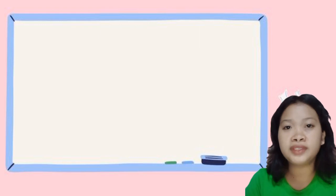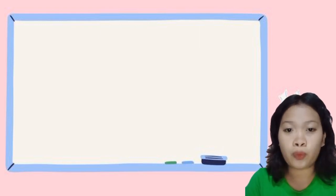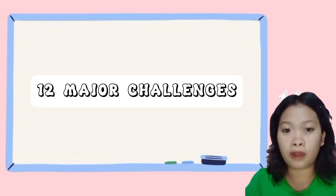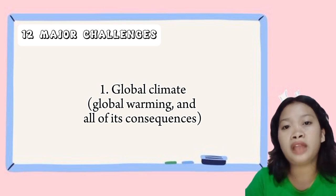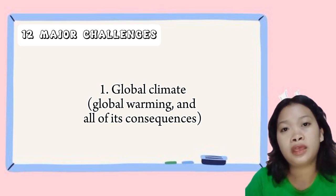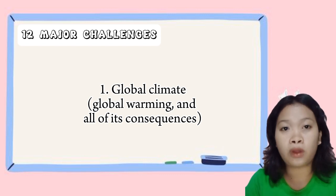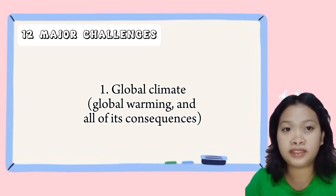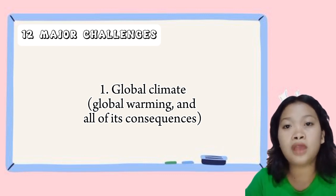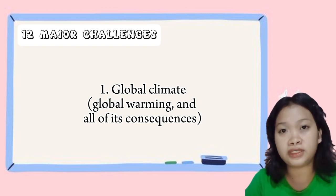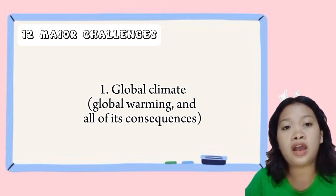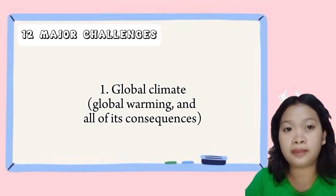When we say environmental science, there are also major challenges. We have 12 major challenges when it comes to environmental science. First is global climate change. This includes global warming and its consequences such as rising sea levels, more frequent and intense storms, and changes in weather patterns. The primary cause of global climate change is the emission of greenhouse gases such as carbon dioxide into the atmosphere.